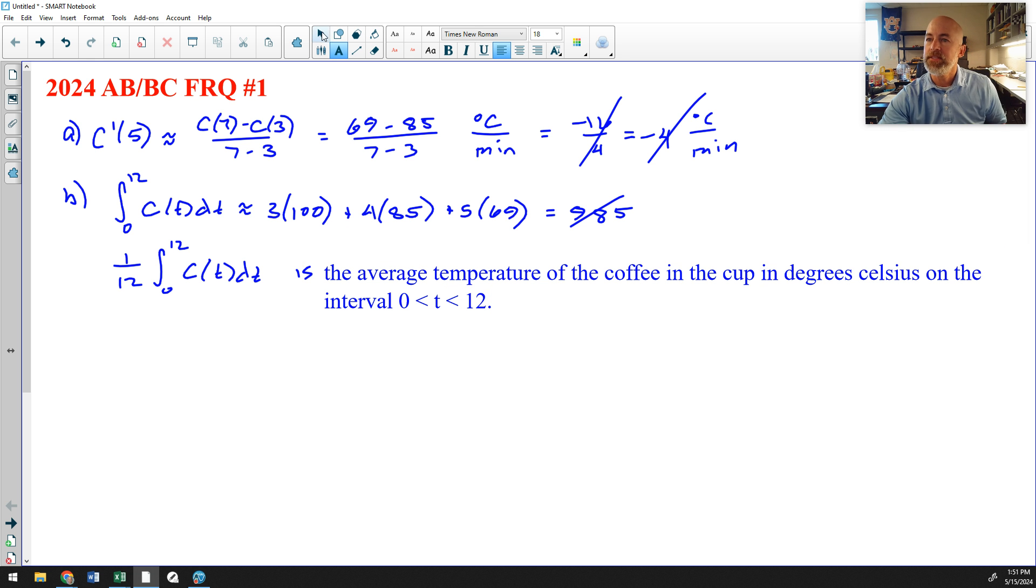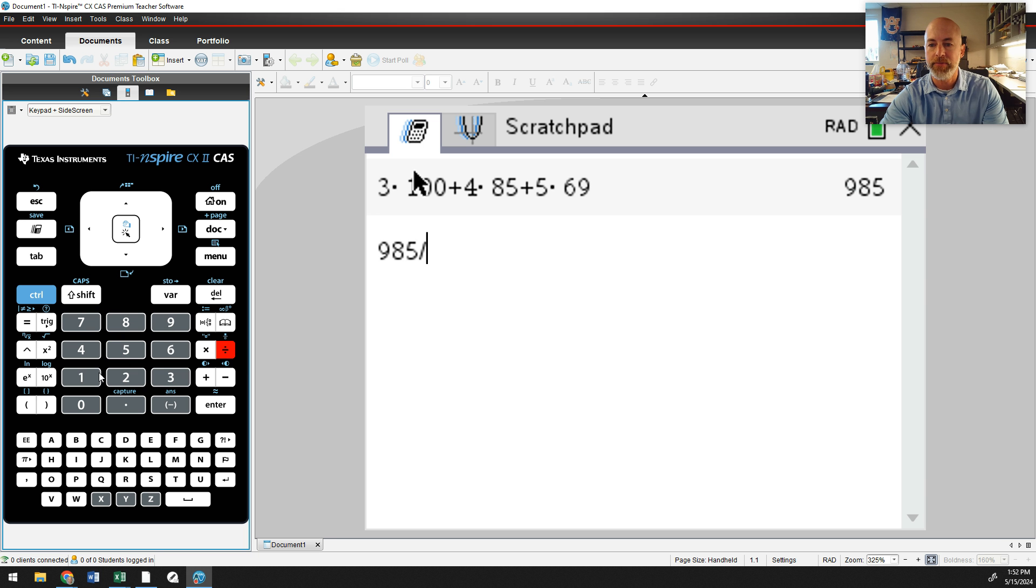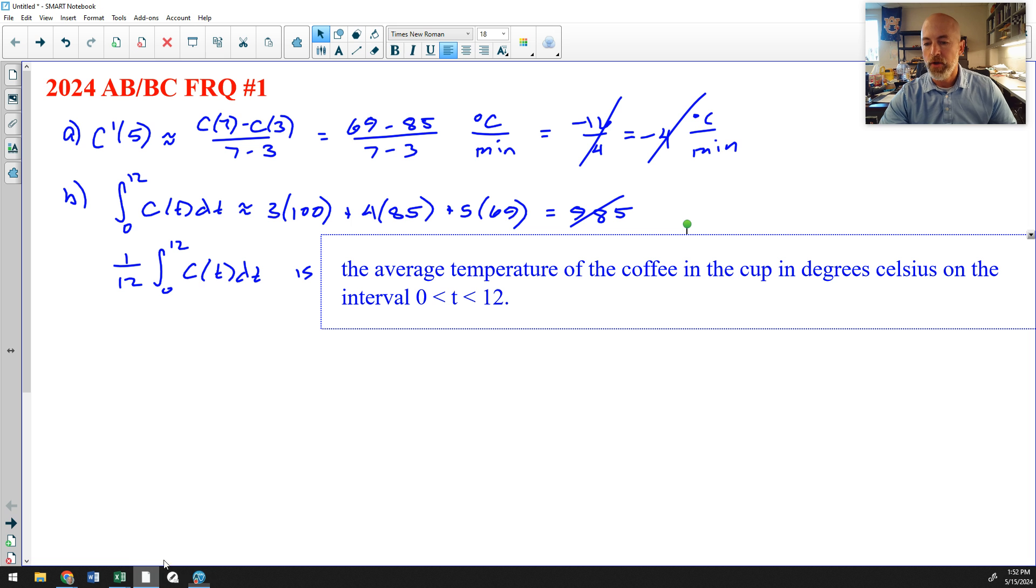And just to see if this is a reasonable approximation, that is the average temperature of the coffee in the cup, degrees Celsius. I like that answer. Now I'm going to very quickly do 985 divided by 12 just to satisfy some curiosity. So 985 divided by 12, get the decimal approximation, and I should get something that represents the average of the data. I'm getting 82.083, and I'm looking at my data. I have values of 100, 85, 69, and 55. And I think 82 is a reasonable average for the set of data that I have, so I really like my answers so far. Notice they asked us to interpret the meaning of that integral one twelfth from 0 to 12. They didn't ask you to actually evaluate it. So I'm not going to bother with the evaluation of it. I'm not going to answer questions that are not asked.